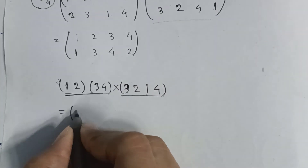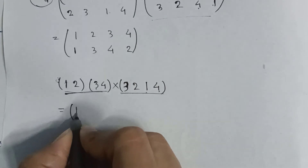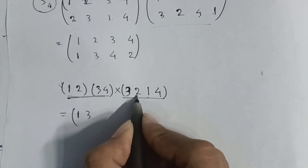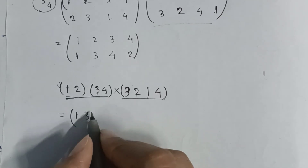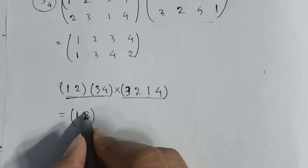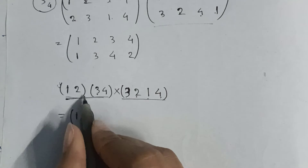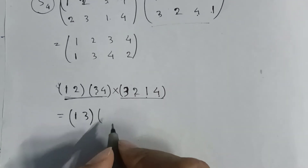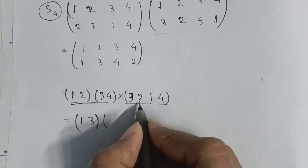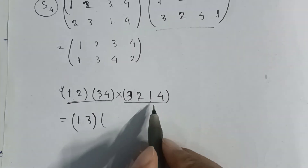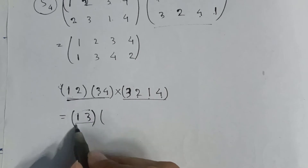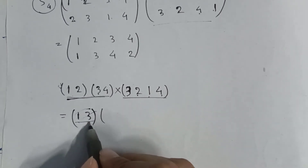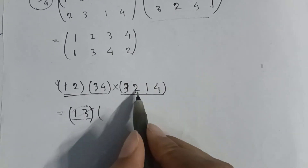Three goes to two and two goes to one, so we close the bracket since three goes to one. Now consider a number not in this bracket. Two is not in this bracket — there are only one and three — so consider it from two.